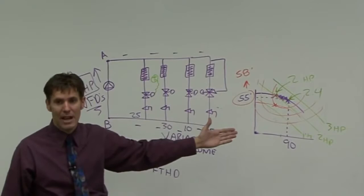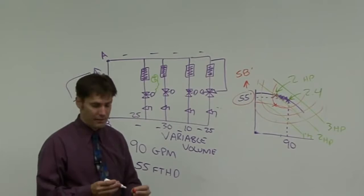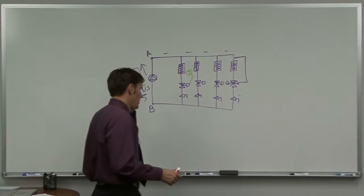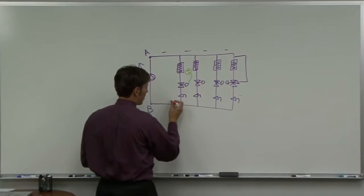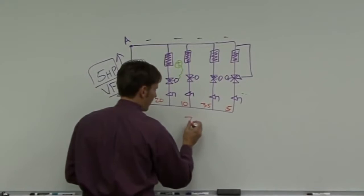You have to make sure the system is operating properly so that we can get the greatest turndown on that VFD. Let's get into balancing the system. Consider a system where: circuit 1 wants 20 GPM, circuit 2 wants 10 GPM, circuit 3 wants 35 GPM, and circuit 4 wants 5 GPM. That totals 70 GPM — that's what my system requires at design conditions, say 0°F outside air temperature.